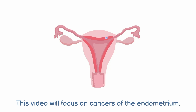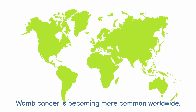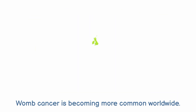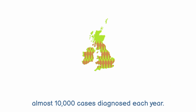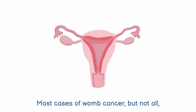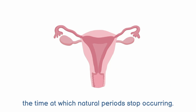This video will focus on cancers of the endometrium. Womb cancer is becoming more common worldwide. In the United Kingdom, there are almost 10,000 cases diagnosed each year. Most cases of womb cancer, but not all, are seen in people after menopause, which is the time at which natural periods stop occurring.